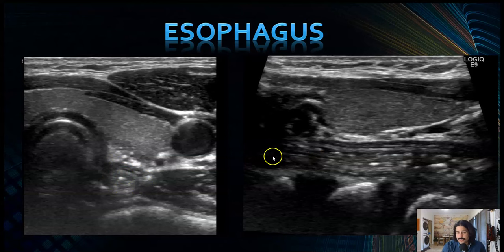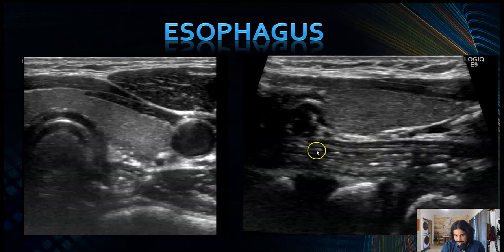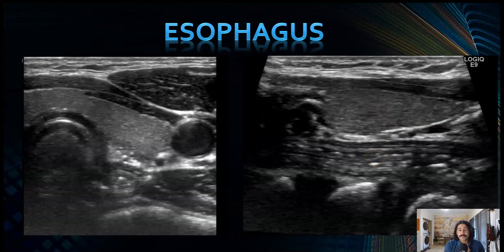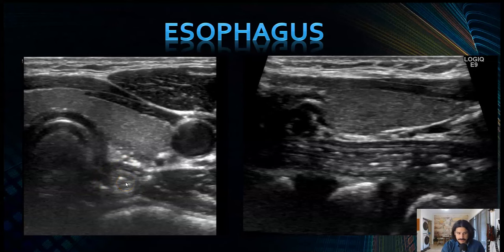In a longitudinal view you can see vertebrae, the esophagus with gut signature, the lumen with air bubbles inside, and then the left lobe of the thyroid. In this view you can ask the patient to swallow and see the saliva and air going down. This is also good to know because when doing a thyroid ultrasound, if you're inexperienced, you may see this and think it's a parathyroid lesion — but no, it's the esophagus.